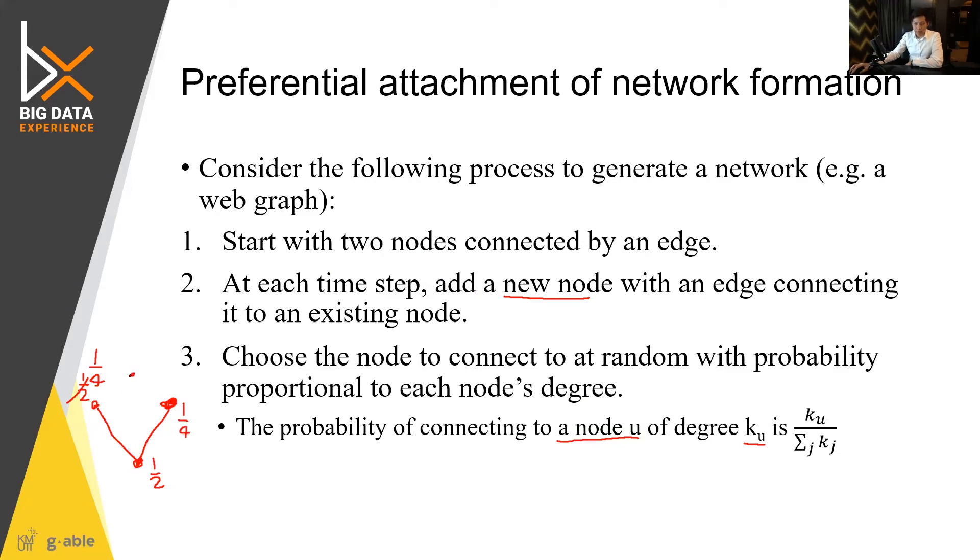And then we have new node coming in. And then we kind of randomly picking the best node to attach. Now suppose that we are lucky and got this connect to this one. Now the probability of the node will be updated. Total number of degree we have here would be 1 plus 2 plus 2 plus 1. That would be 6.